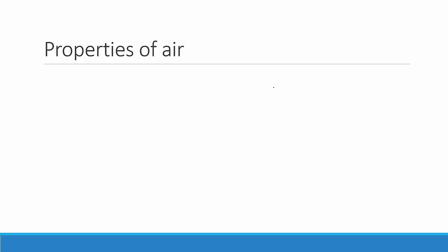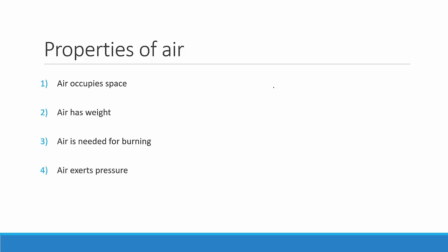Now let's see some of the properties of air. We will be seeing four different properties of air. The first one is that air occupies space. The second one is that air has weight. The third is that air is needed for burning. And the fourth one is that air exerts pressure. Each of these we will see with a simple experiment.